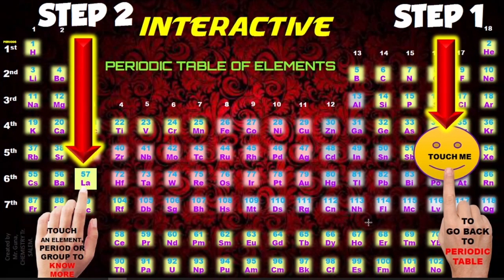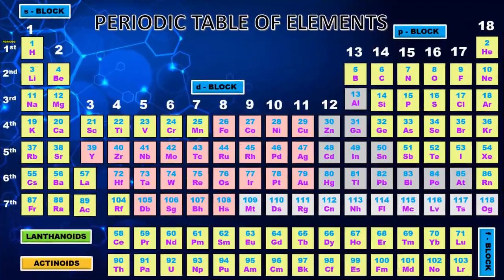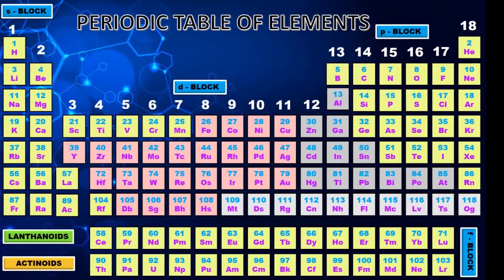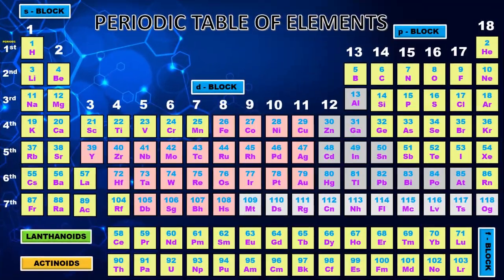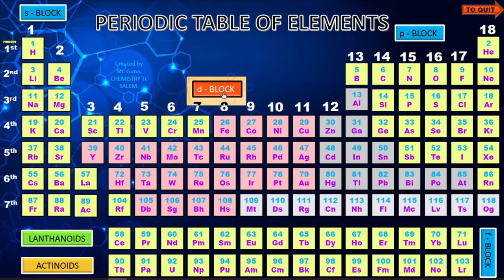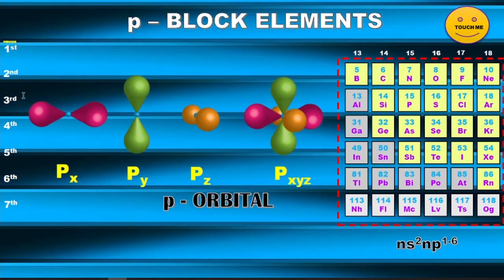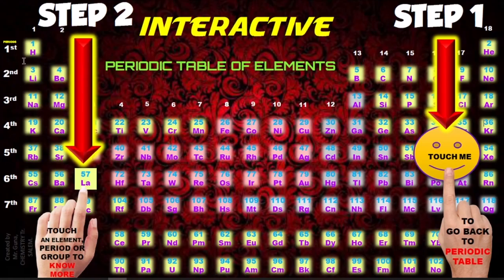The most important advantage of this periodic table is that it is very handy and given in PDF format. You can utilize it on a PC and also on your mobile phone. It occupies very little storage so it can be shared with anybody. Most importantly, this periodic table is very interactive in nature and anyone can use it.